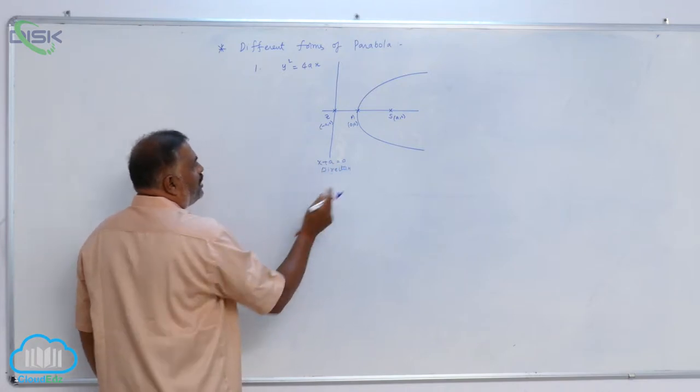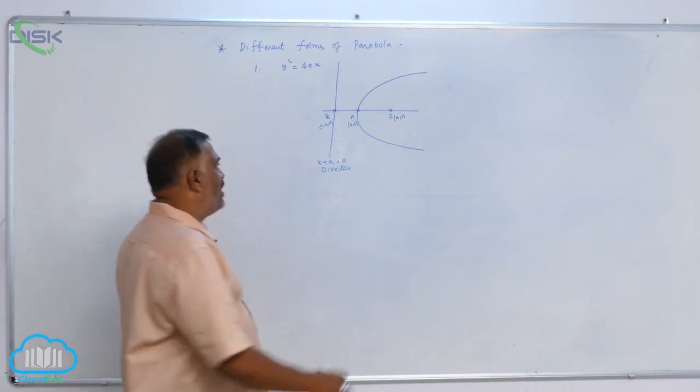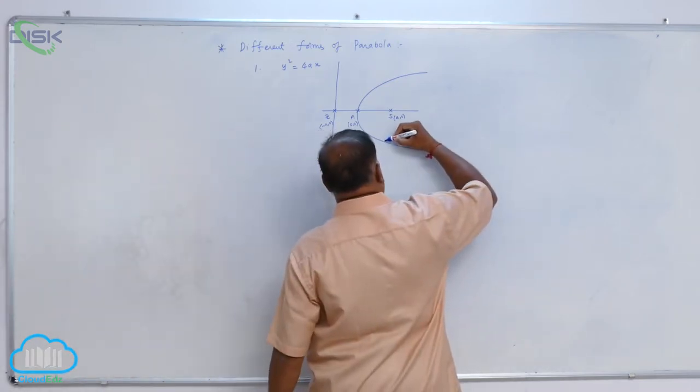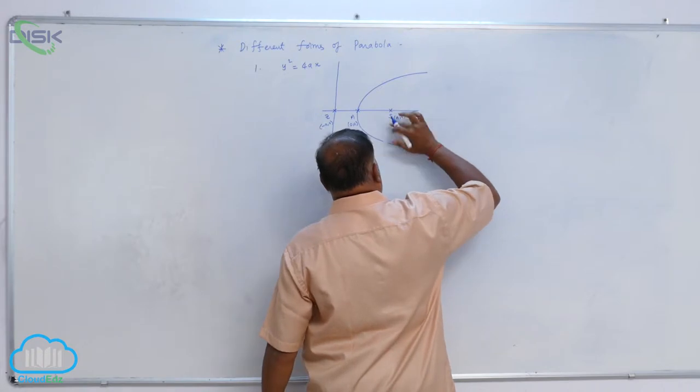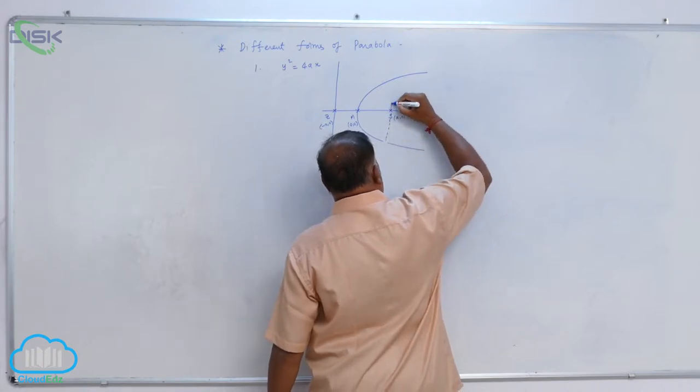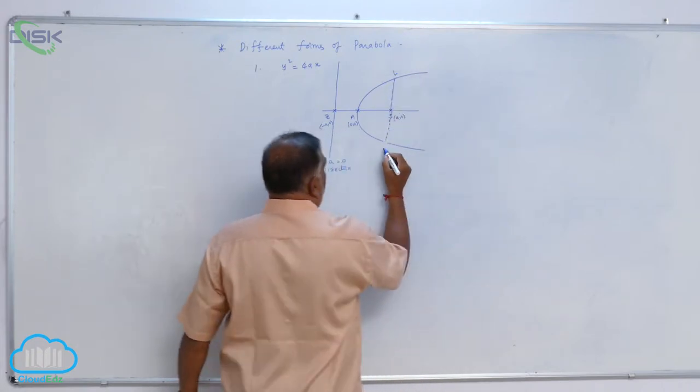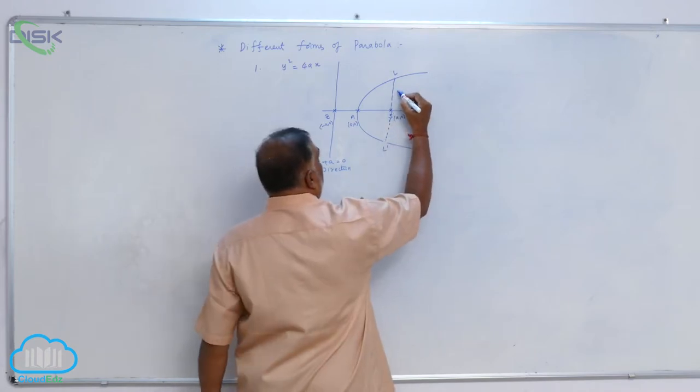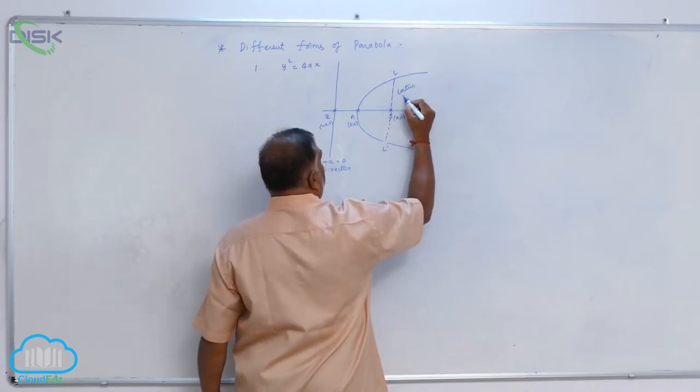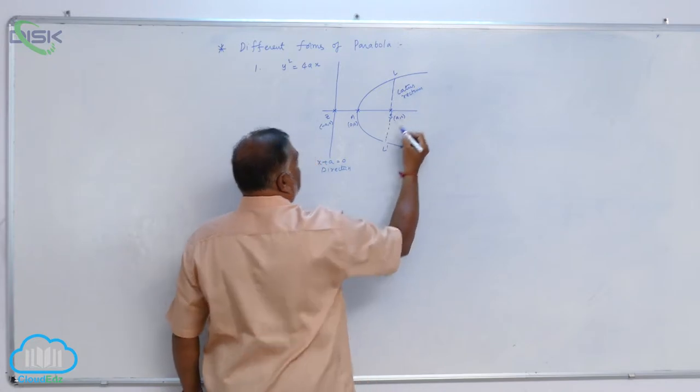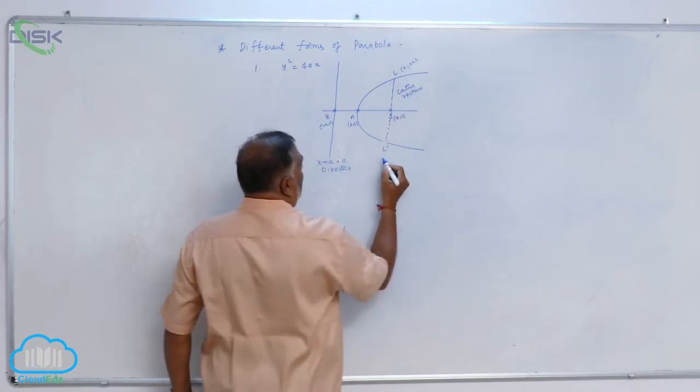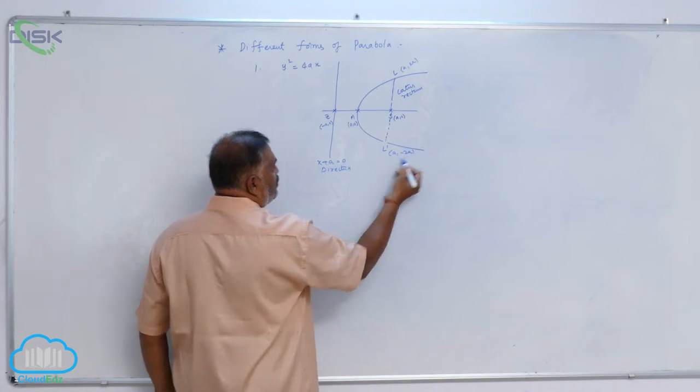Now we are able to see clearly these are the properties. If you join like this, if you join like this, this is called LL dash, this is called Latus Rectum. This is a, 2a and this is a, minus 2a.